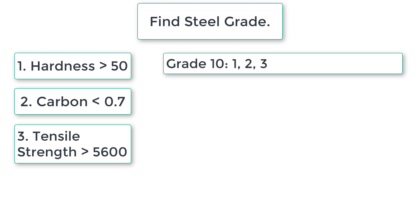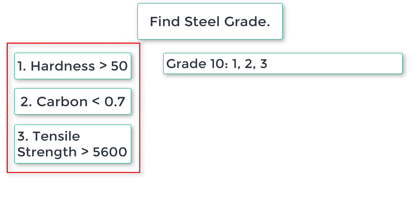Here we are showing grades from 10 to 5. Grade 10 means all three conditions must be true: hardness must be greater than 50, carbon content must be less than 0.7, and tensile strength must be greater than 5600.